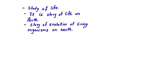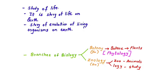When we study biology, it is the story of life on earth — right from the beginning until now. Whatever life has existed on this earth, that study is called biology. The story of evolution of living organisms on earth can also be termed biology. When we talk about the branches of biology, there are two: botany and zoology.